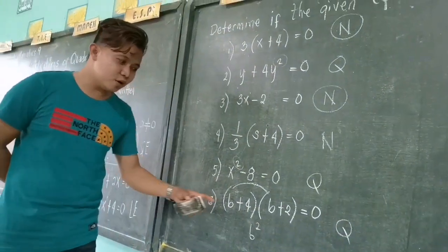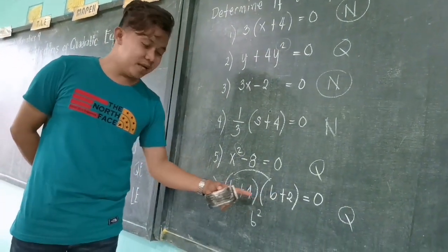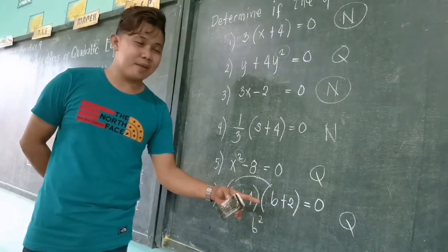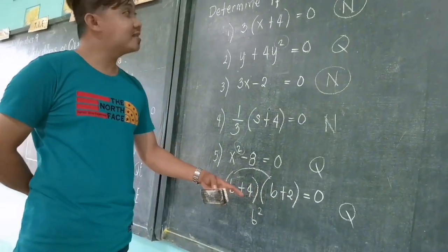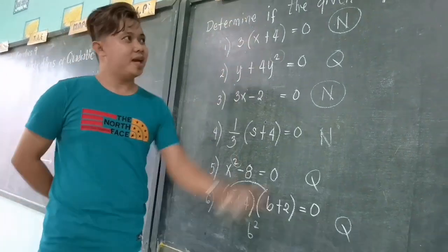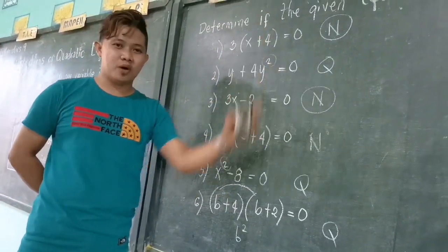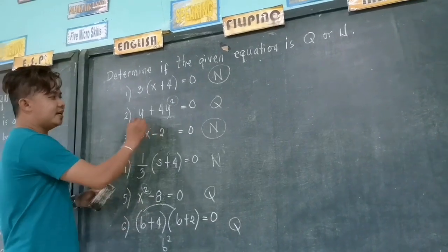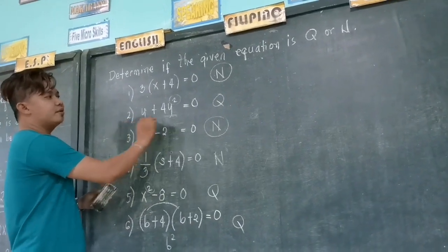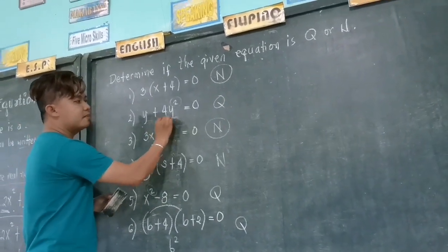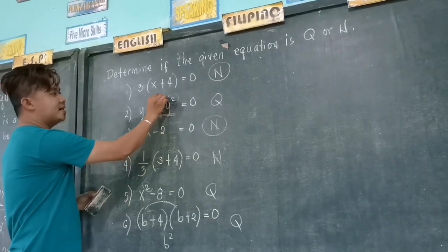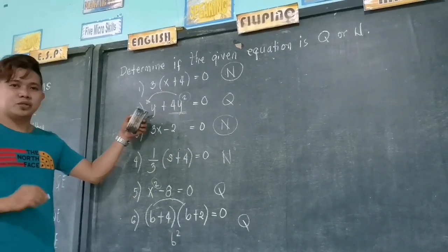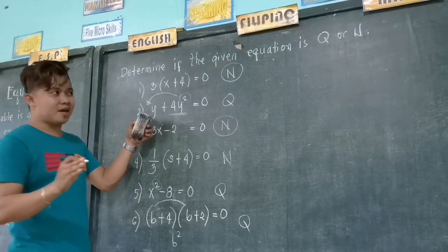Do we need to expand this one fully? No need, because at this point we are just tasked to determine if it is quadratic or not. You might wonder why in number 2 the quadratic term is not written first. This brings us to the topic of standard form.